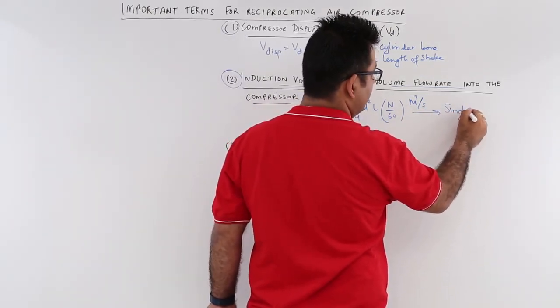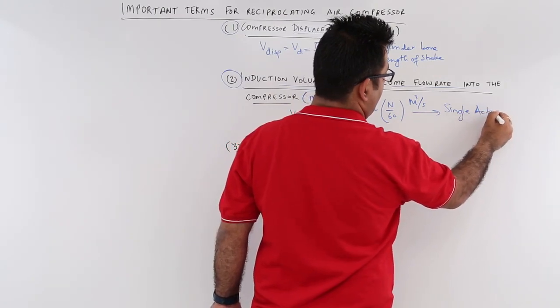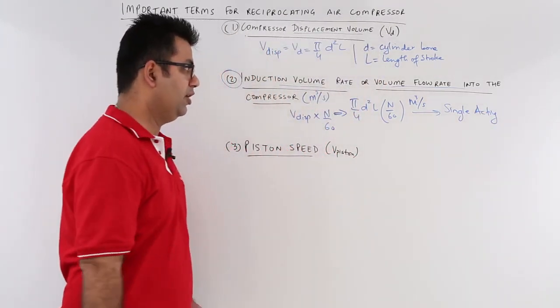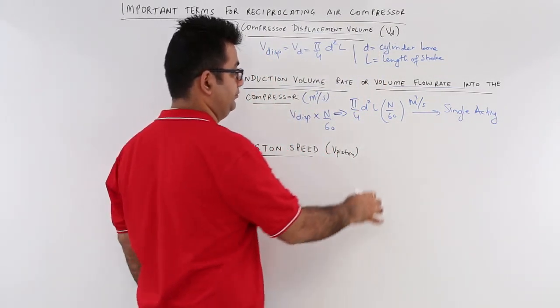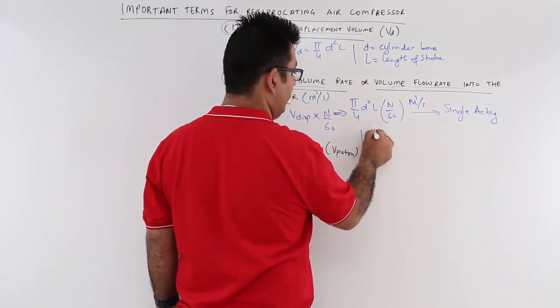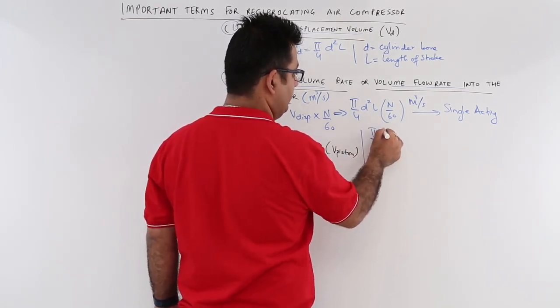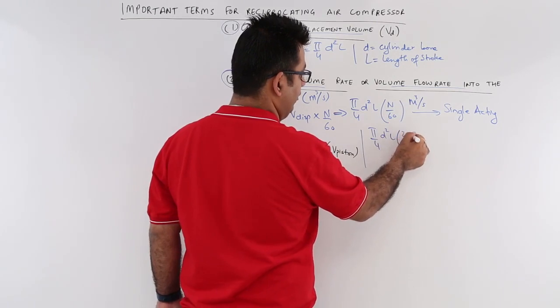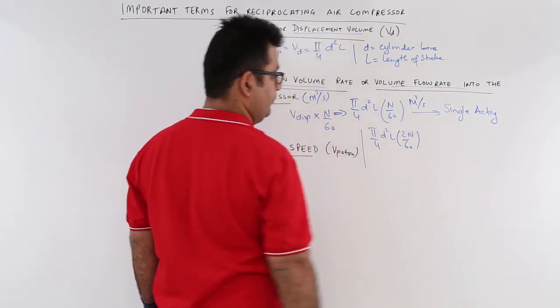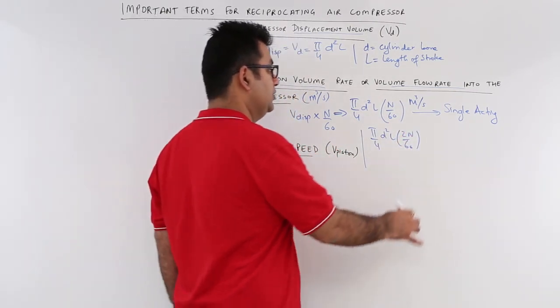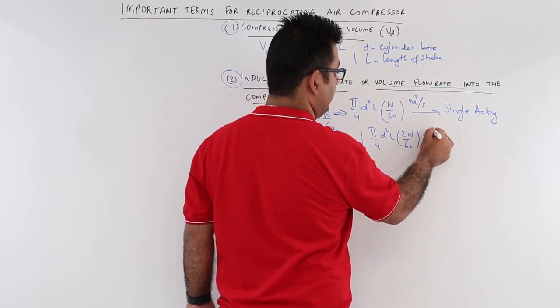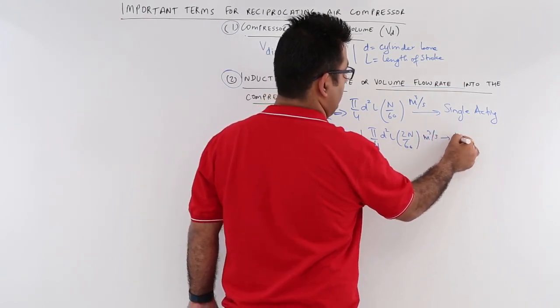If your compressor is single acting, now if your compressor is double acting, then it would be π/4 × 2n/60. So this becomes meter cube per second, this is for double acting.